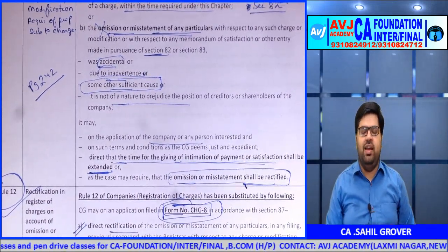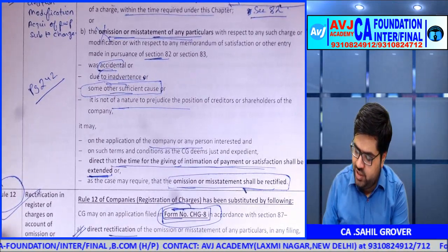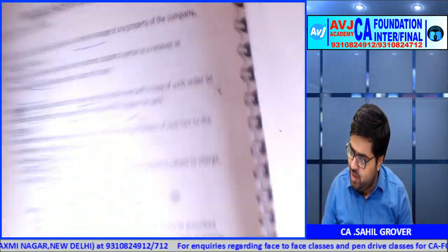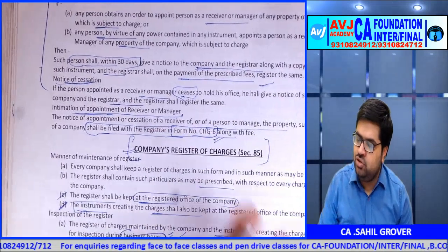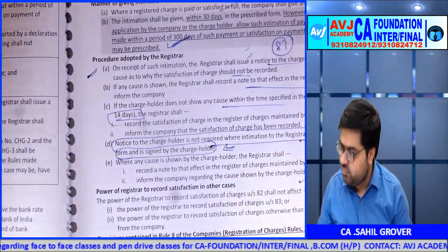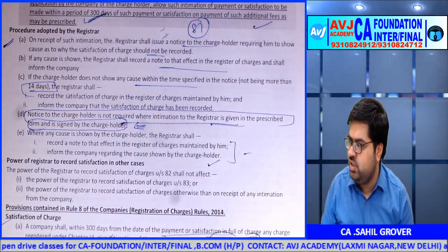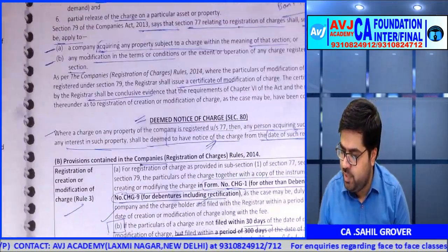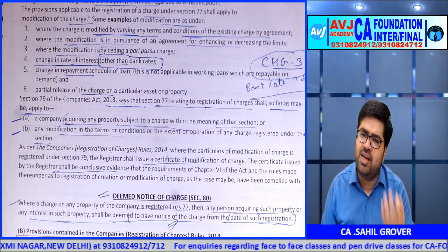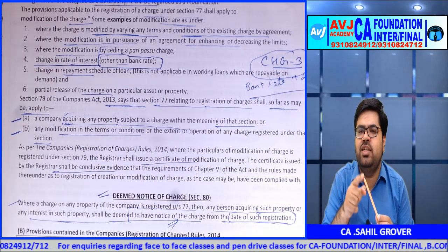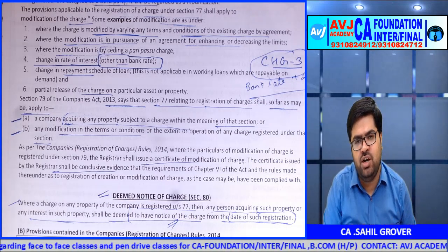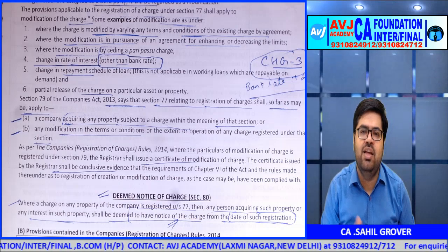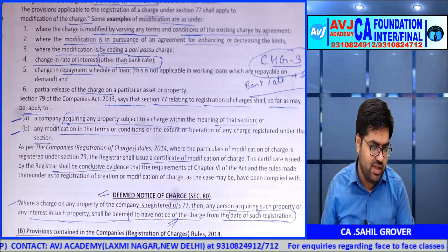Forms summary: CHG1 and CHG9 for registration; CHG2 is the registration certificate; CHG3 for modification particulars; CHG4 for satisfaction application; CHG5 is the satisfaction certificate; CHG6 for receiver/manager information to Registrar; CHG7 is the company's own register of charges maintained at registered office; CHG8 for the condonation application to Central Government. All important sections from Section 77 to 87 plus Section 2(16) definition have been covered.